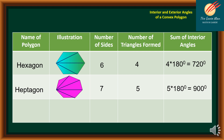If we continue the pattern for an N-gon, the number of sides is N, where N is three or more. From the pattern: six sides gives four triangles, seven sides gives five triangles. So for N sides, the number of triangles formed is N minus two. Therefore, the sum of interior angles is N minus two times 180 degrees.